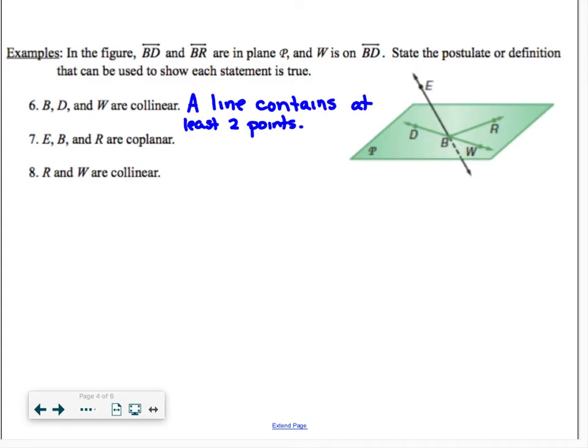Number seven, points E, B and R are coplanar. If you take a look at the picture, although there is no plane drawn on the figure, there does exist a plane through those three non-collinear points. How do we know that? The second postulate, it says through three non-collinear points, there is exactly one plane.